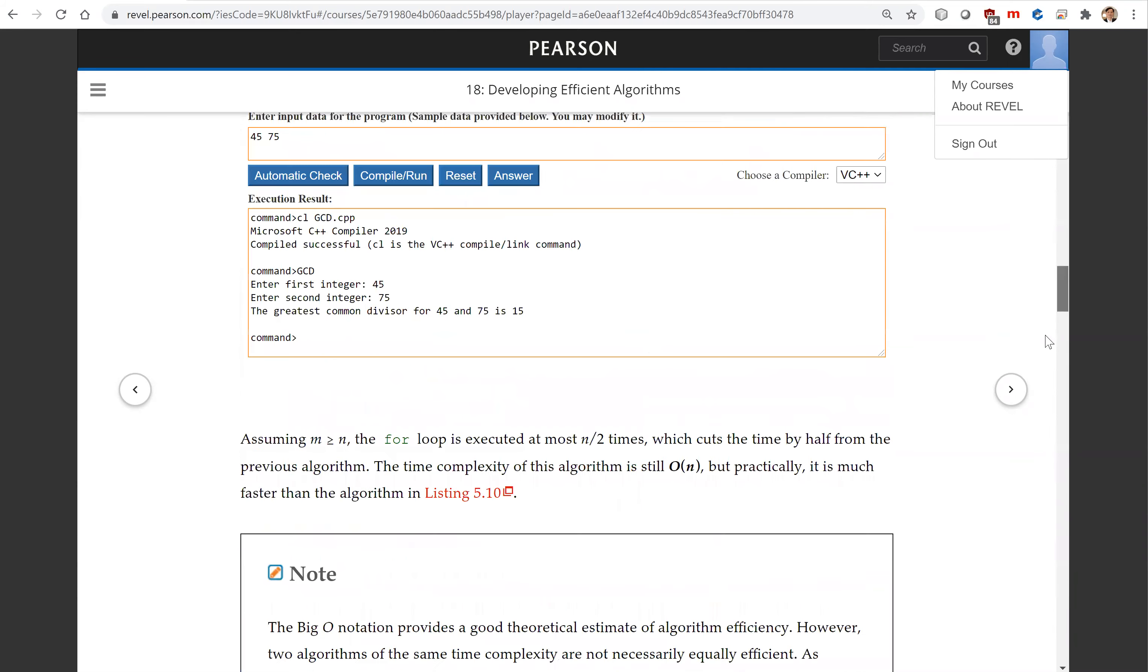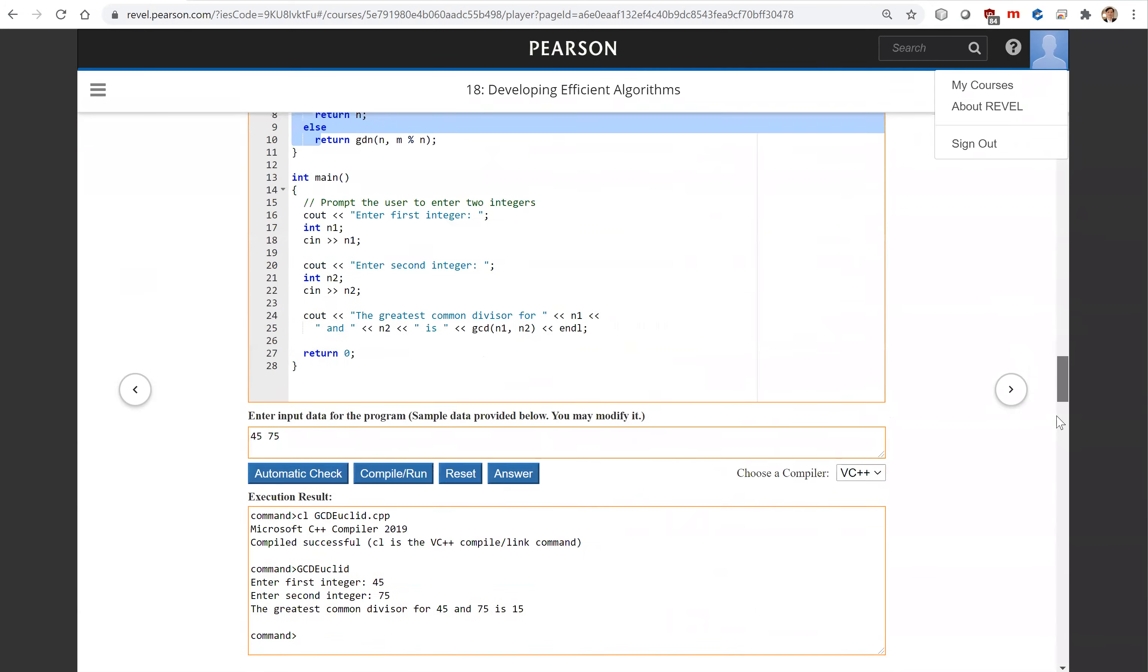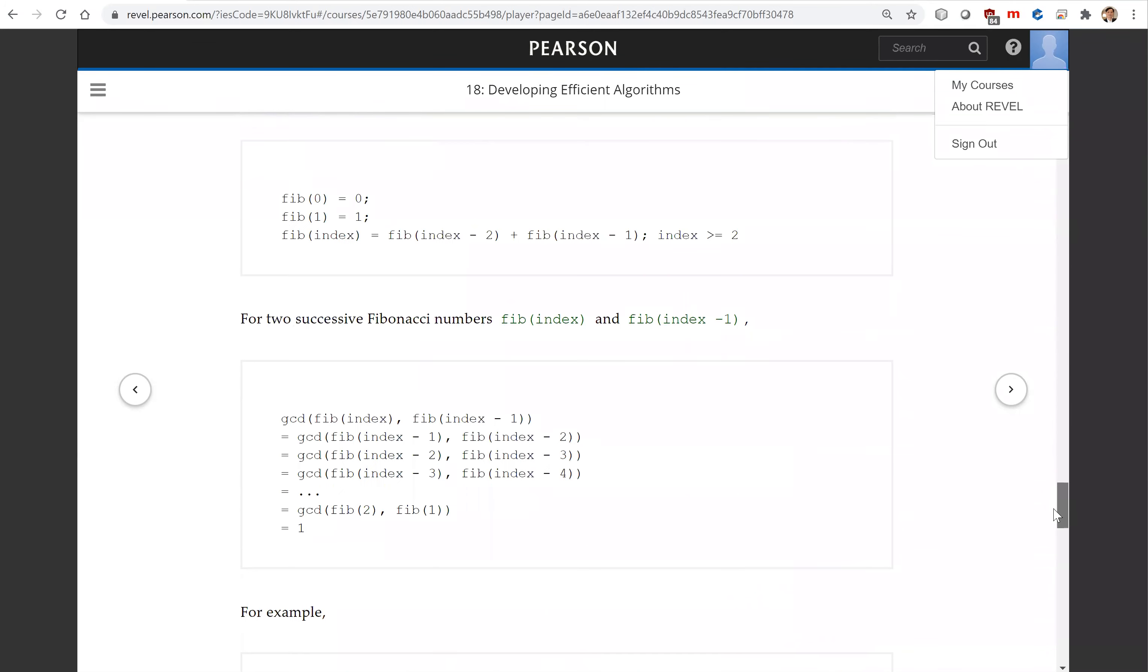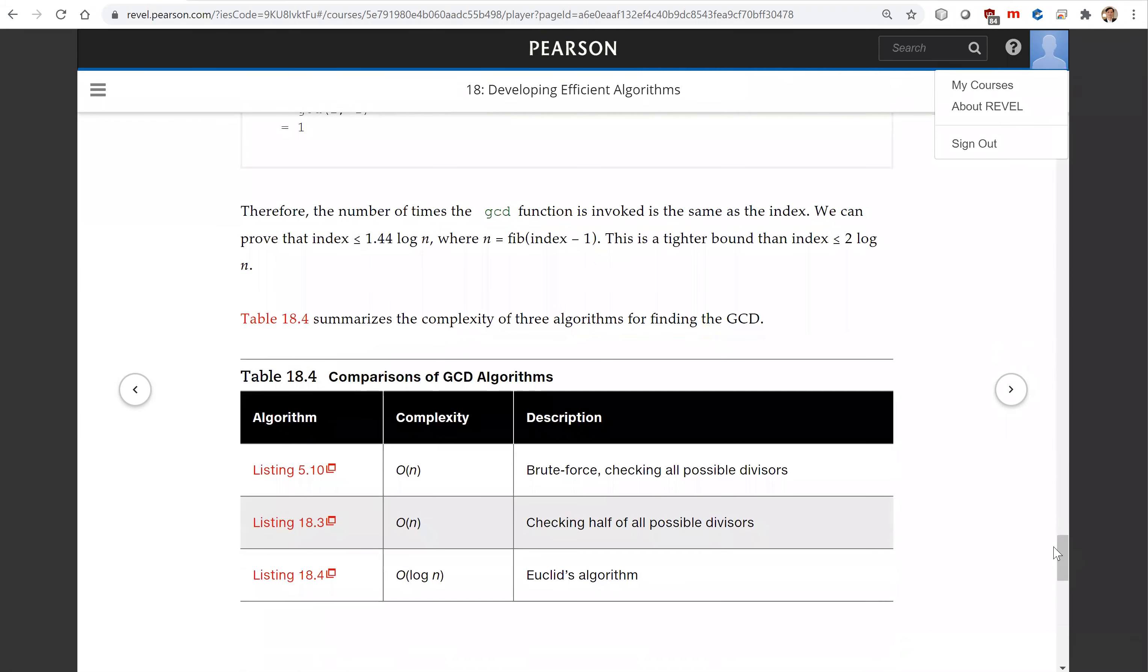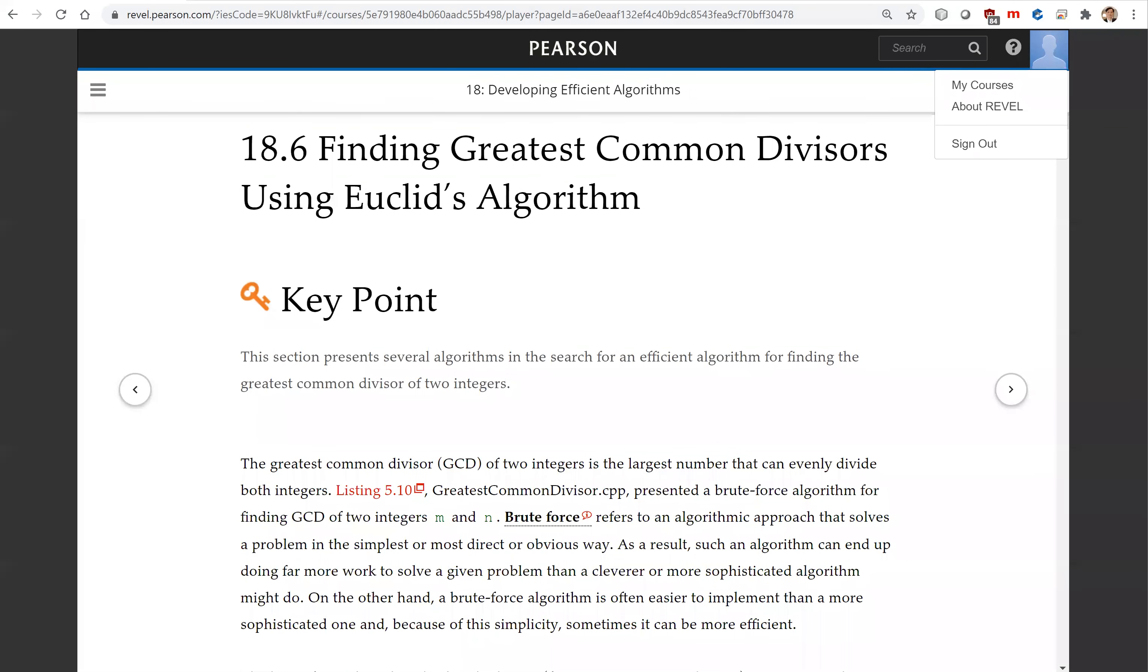This is the summary here. Look at this table summarizing all the various approaches we have. Euclid's algorithm gives O(log N) and all the others are O(N) time. That is all for this section on finding greatest common divisors using Euclid's algorithm. See you on the next video.